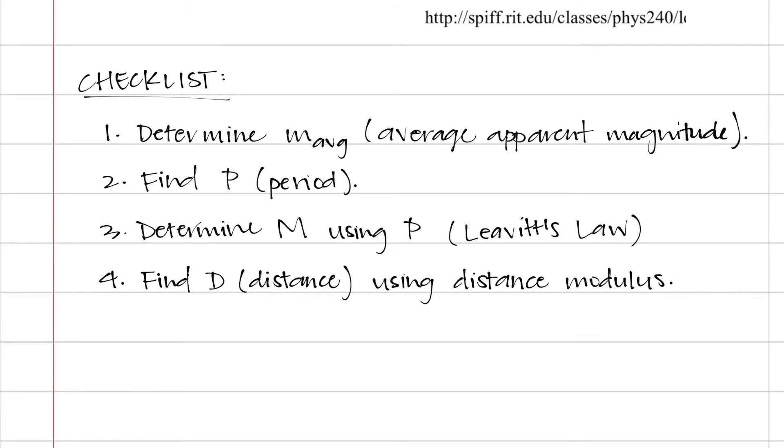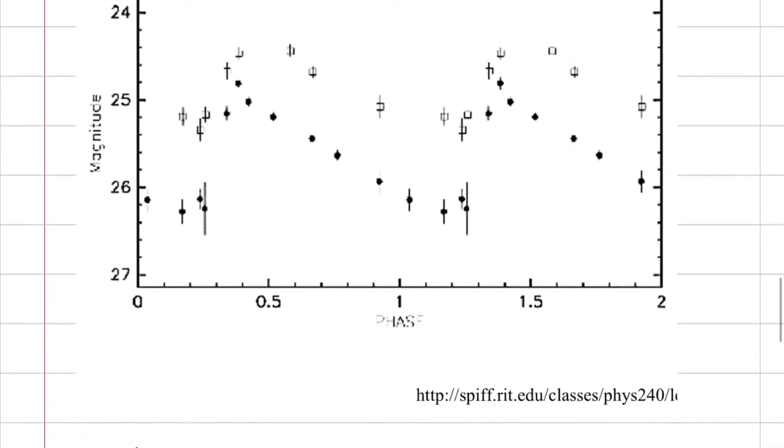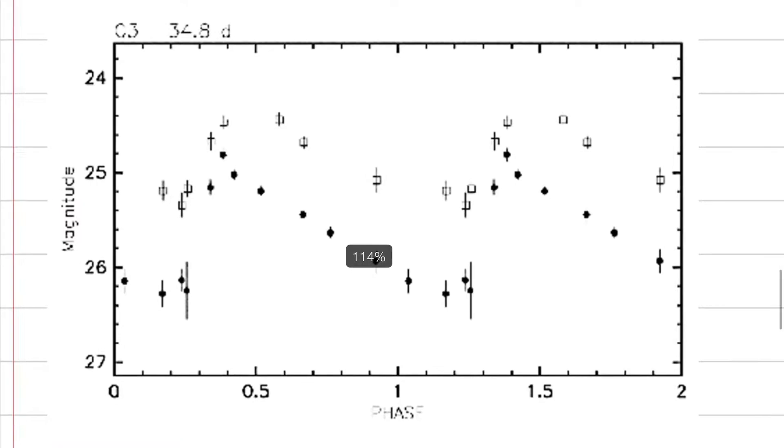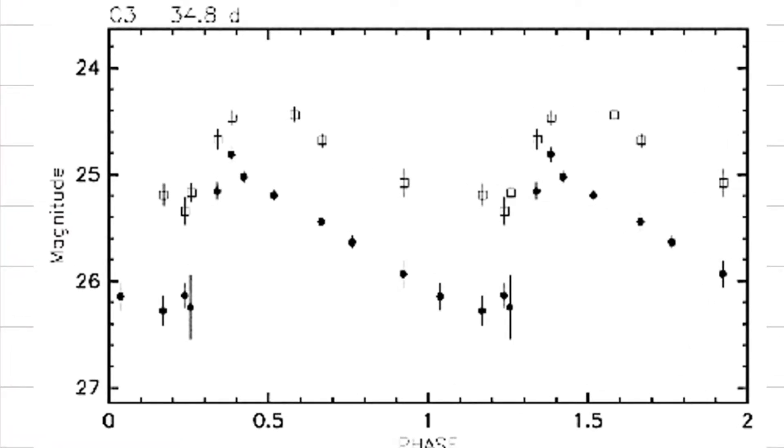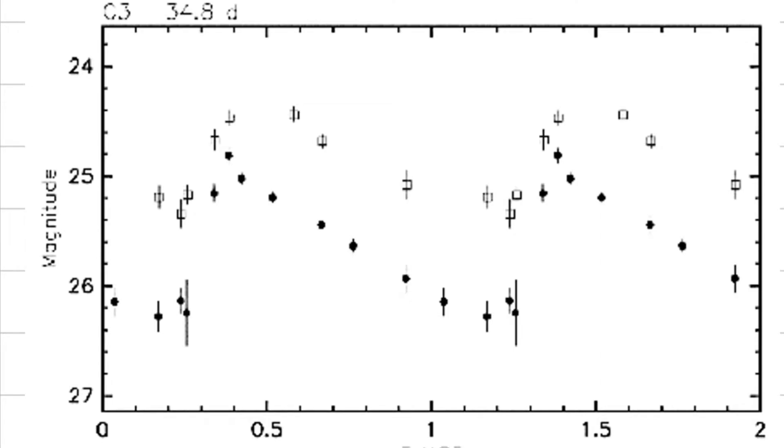So first things first, we have to determine the average apparent magnitude given the period luminosity graph. So that's the first thing we'll do, so let's go ahead and use a blue pen for that. Looking at the graph, the first thing I want to do is identify where my curve actually is. So I'm gonna trace the circular black dots with a generic shape, doesn't have to be perfect, as long as it just kind of highlights the curve, so that I can identify where my points need to go.